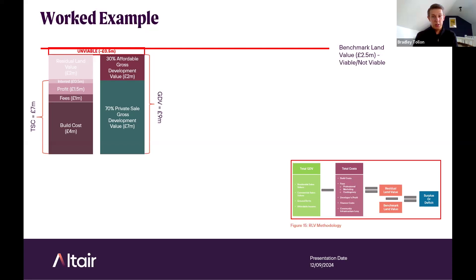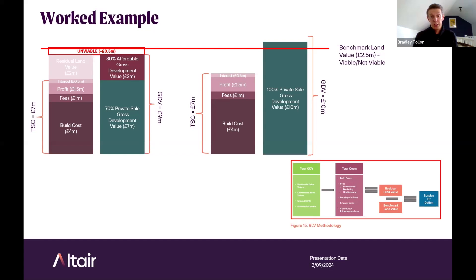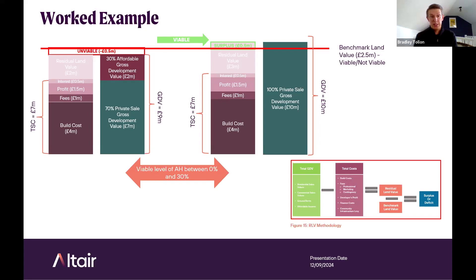We then test what the viability of a 100% private sale scheme is — the most profitable scenario. With costs remaining static at £7 million but the GDV increasing to £10 million as the scheme is 100% private sale, the residual land value is now £3 million. This exceeds the benchmark land value by half a million pounds, so we know the 100% private sale scheme is viable. Therefore the viable level of affordable housing is somewhere between zero and thirty percent, and we then test various affordable housing scenarios until we find the viable level.